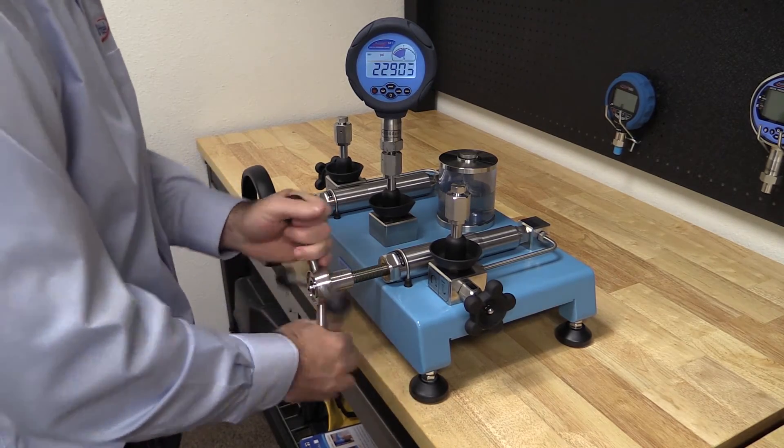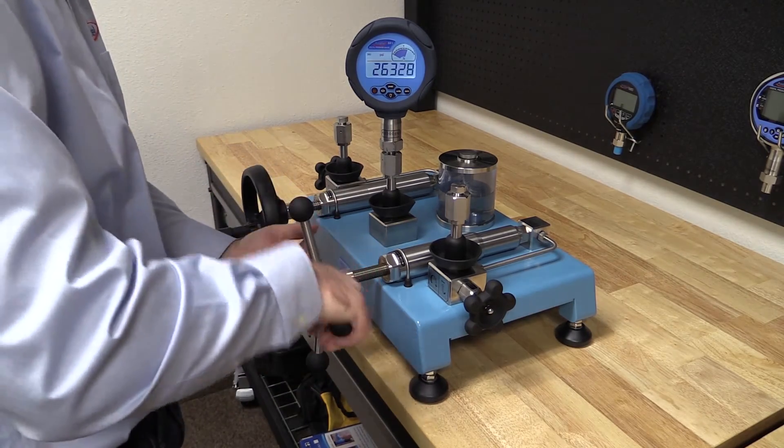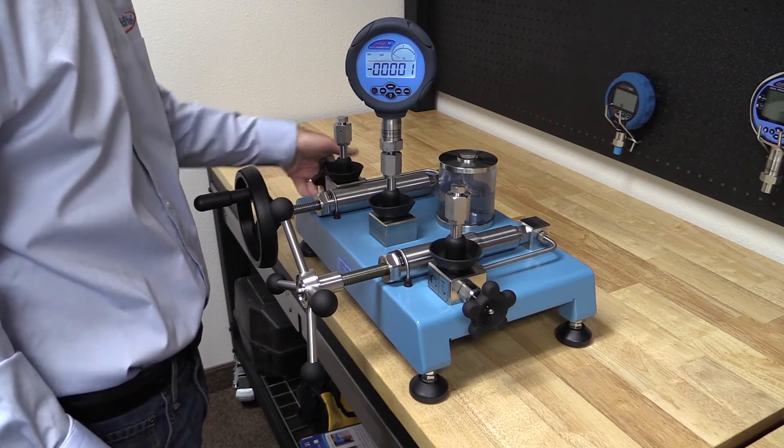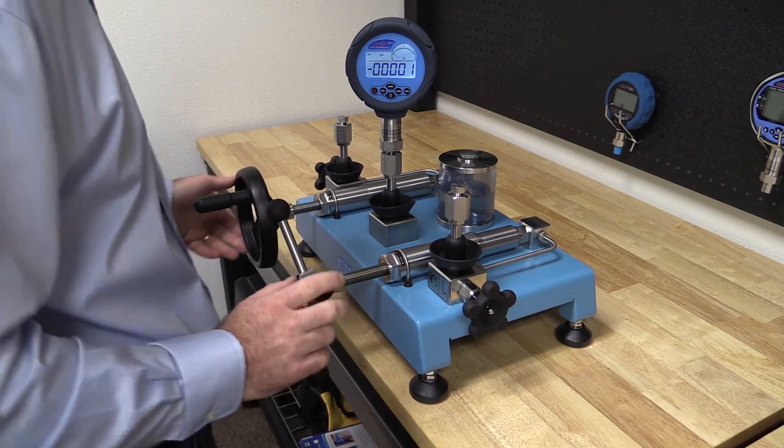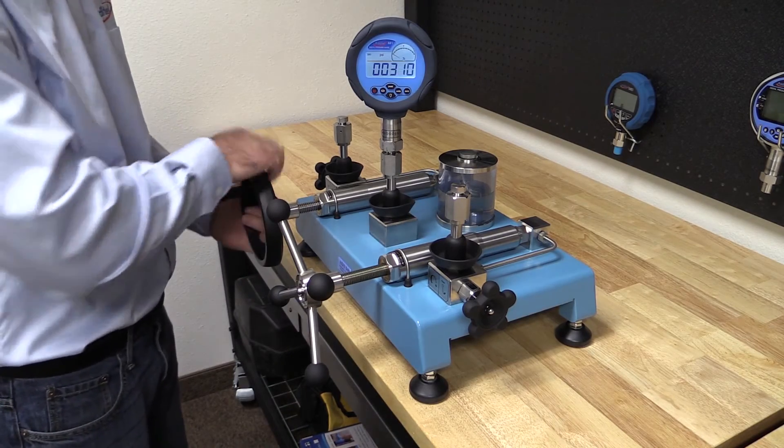You should easily be able to generate full scale pressure with less than half the stroke of the screw presses. If I want to generate 40,000 psi, for example, I would close the vent valve and screw in the pre-pressure screw press until about 5,000 or 6,000 psi.